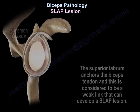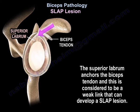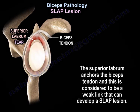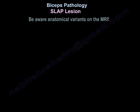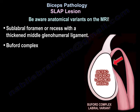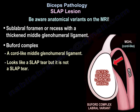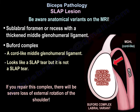The superior labrum anchors the biceps tendon, and this is considered a weak link that can develop a SLAP lesion. Be aware of anatomy variants on the MRI, such as sublabral foramen or recess with a thickened middle glenohumeral ligament, or Buford complex, which is a cord-like middle glenohumeral ligament. If you repair that complex, there will be severe loss of external rotation of the shoulder.